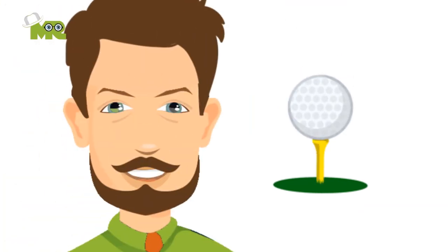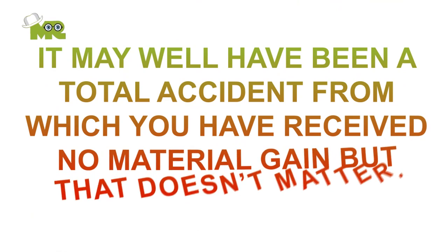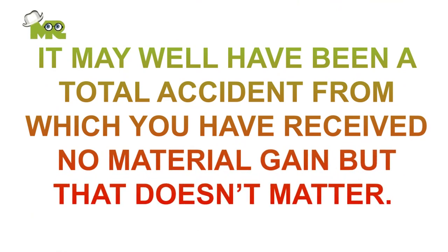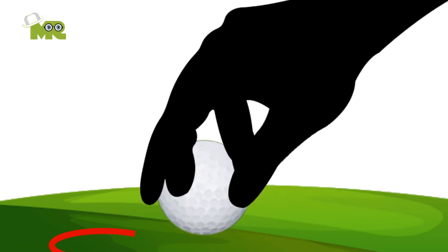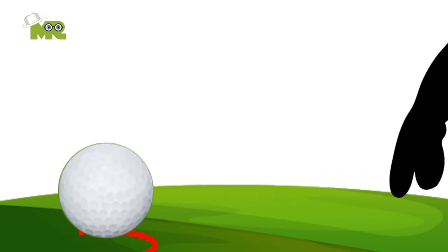But in case you accidentally move your ball in other areas of the course, you can't do that. It may well have been totally an accident from which you've received no material gain, but that doesn't matter. It will be considered cheating, and the ball needs to be replaced at the original spot.